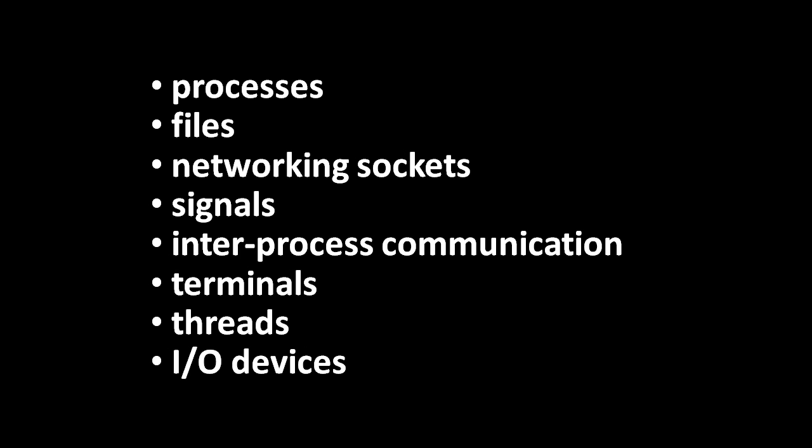Unix systems also have many system calls for what's generically called inter-process communication — some kind of mechanism for processes to communicate with each other. Network sockets are one form of inter-process communication, because when a process communicates over a socket, the other program doesn't have to be on another system — it can actually be another process on the same system. But for communication between processes on the very same system, there are additional mechanisms which are generally more efficient.